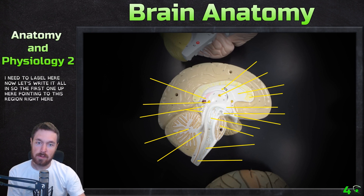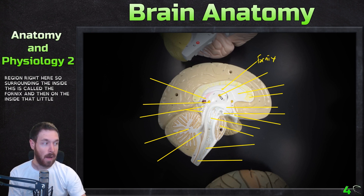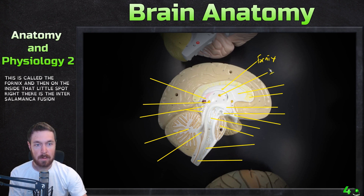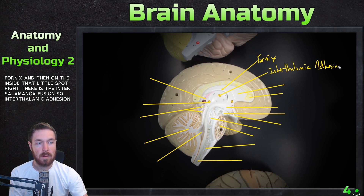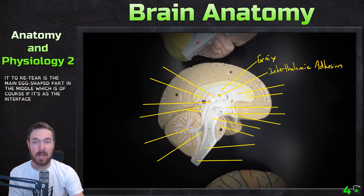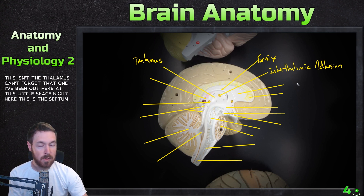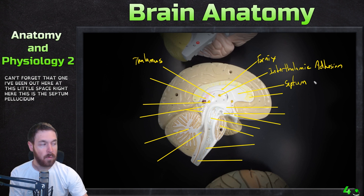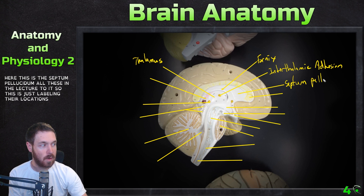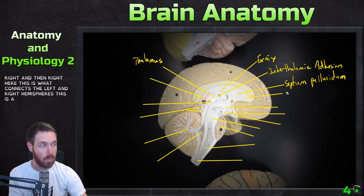Surrounding the inside of this region is the fornix. The small spot on the inside is the interthalamic adhesion. The large egg-shaped part in the middle — since this is the interthalamic adhesion — is of course the thalamus. The little space out here is the septum pellucidum. And this structure connecting the left and right hemispheres is an important one: the corpus callosum.